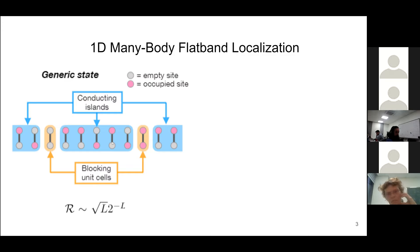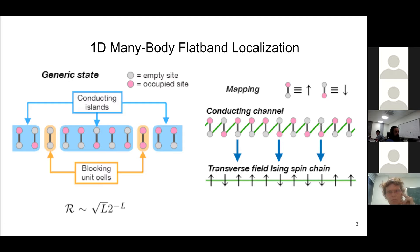What happens in the conducting islands, these islands with one fermion for each unit cell? Well, it can be mapped on spins and using Jordan-Wigner transformation. We can show that this model maps exactly the transverse field Ising spin chain, which is known to be ballistically conducting, but still the relative role of these subsystems in the whole large system is exponentially small, so there is no conductivity.